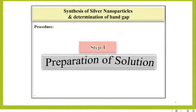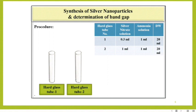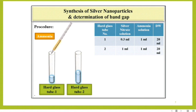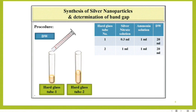Step 1 is the preparation of solution. For that, we require two hard glass tubes — hard glass tube 1 and hard glass tube 2. Prepare the solution as shown in the chart. Take silver nitrate solution in a graduated pipette and add 0.3 ml silver nitrate to hard glass tube 1, and 1 ml silver nitrate solution to hard glass tube 2. Then take ammonia solution in the graduated pipette and add 1 ml ammonia solution to hard glass tube 1 and 1 ml ammonia solution to hard glass tube 2. Then take a cylinder and add 20 ml distilled water to hard glass tube 1 and 20 ml distilled water to hard glass tube 2.